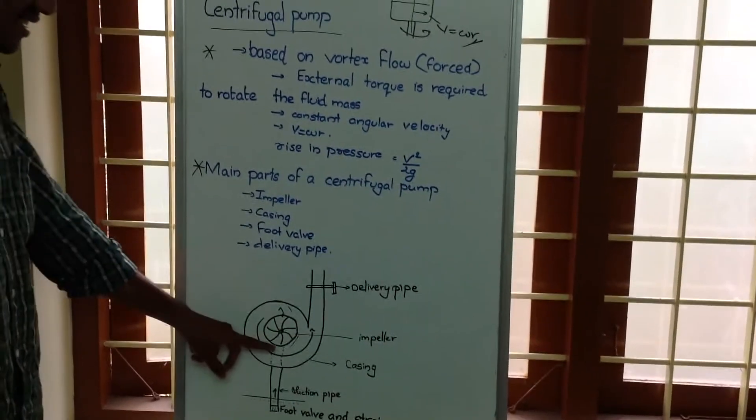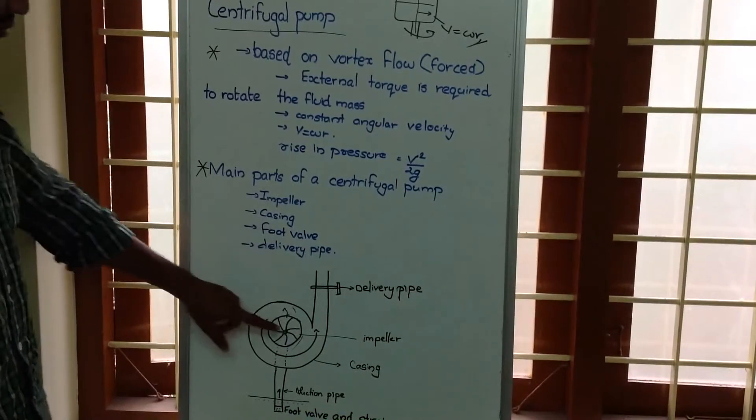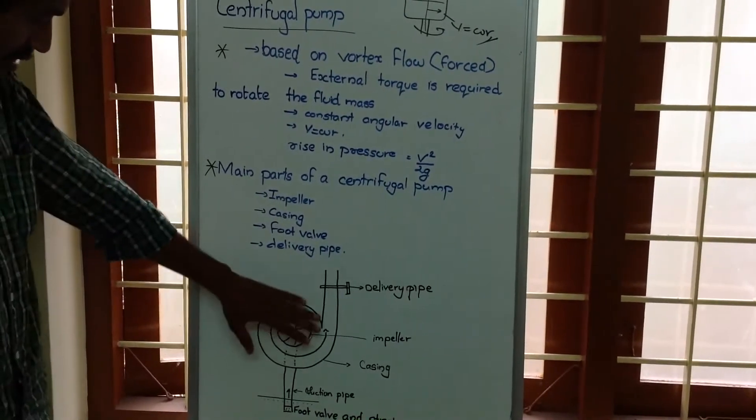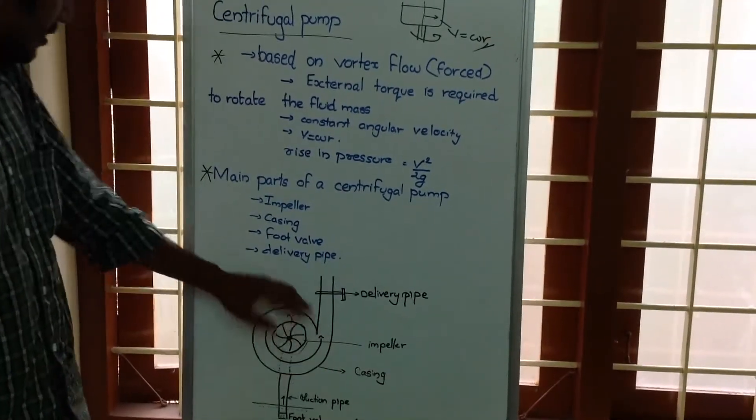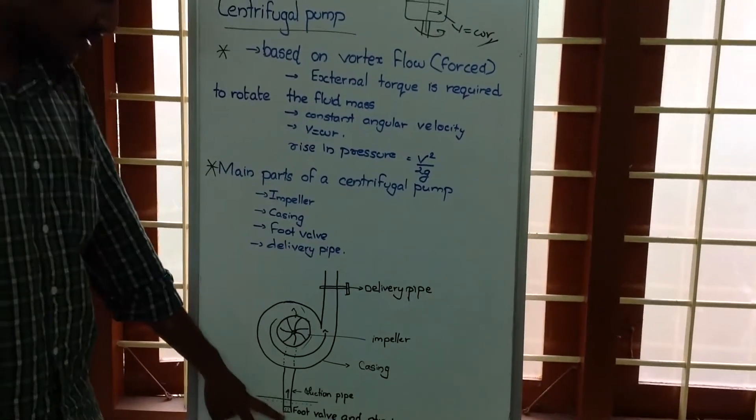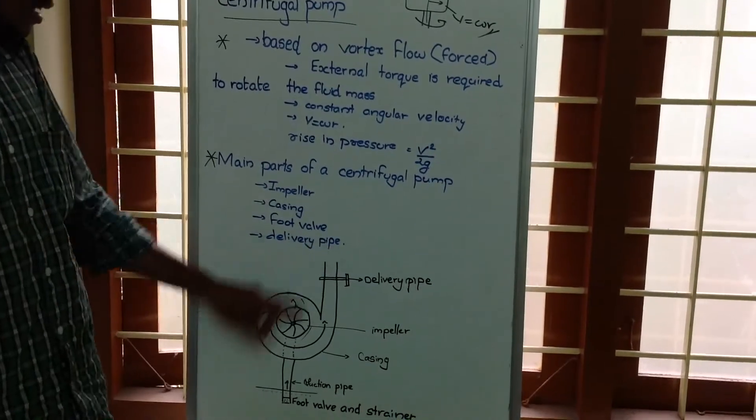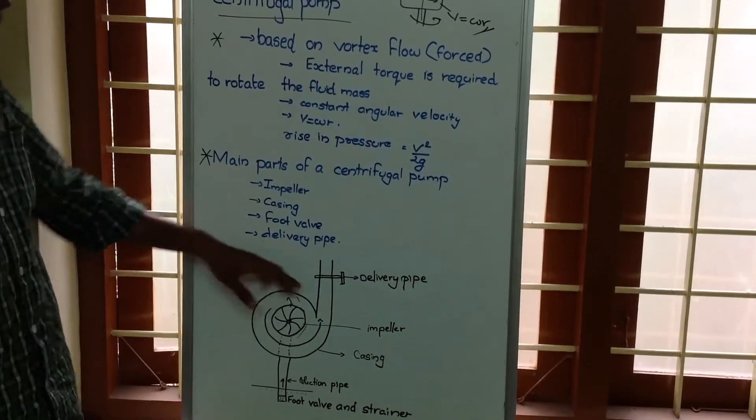Impeller means the blades and casing means this is some type of casing where the area of construction is increasing. Foot valve is present here and then along with the suction pipe, then there is delivery pipe.